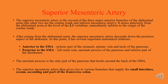Superior mesenteric artery is the second of the three major arteries of the abdominal aorta. The other two are the celiac trunk and the inferior mesenteric artery. It arises anteriorly from the abdominal aorta at the level of L1 vertebra, immediately inferior to the origin of the celiac trunk. After arising, the superior mesenteric artery descends down the posterior aspect of the abdomen, where it has several important anatomical relations.